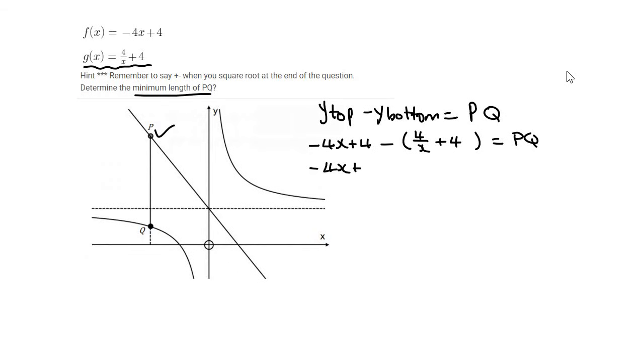We can then simplify. So that'll be minus 4 over x minus 4 equals PQ, and so then what we're left with is minus 4x minus 4 over x, and that's equal to PQ.